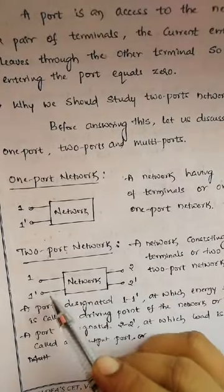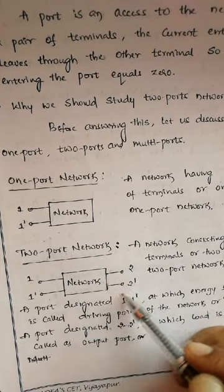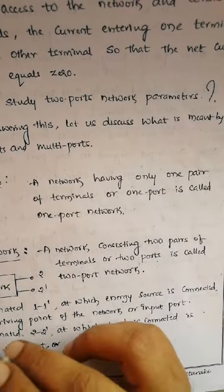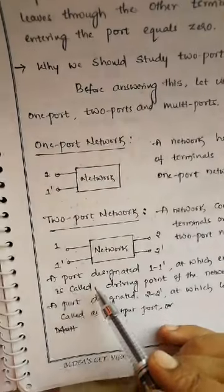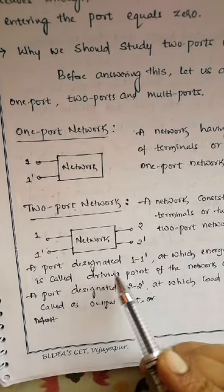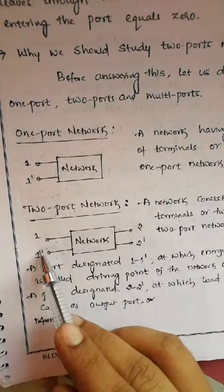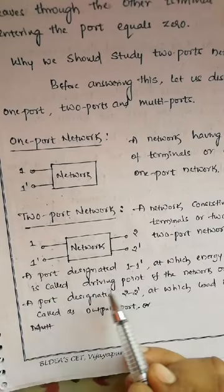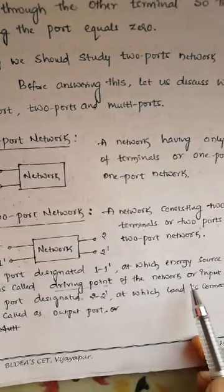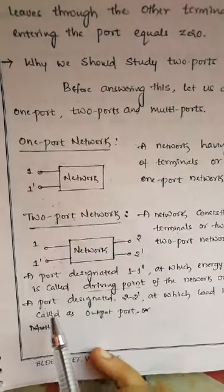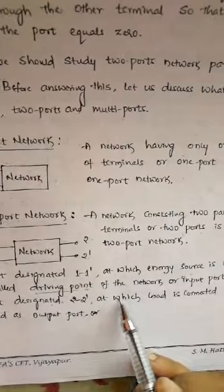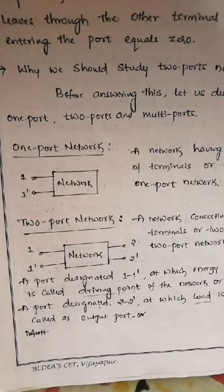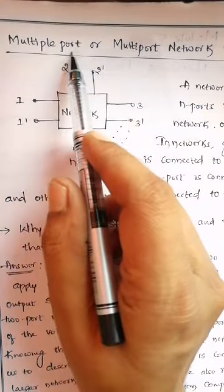A two-port network has two pairs of terminals. A network consisting of two pairs of terminals, or two ports, is called a two-port network. The port designated as one, one-dash, at which the energy source is connected, is called the driving point or input port. The port designated as two, two-dash, at which the load is connected, is called the output port.